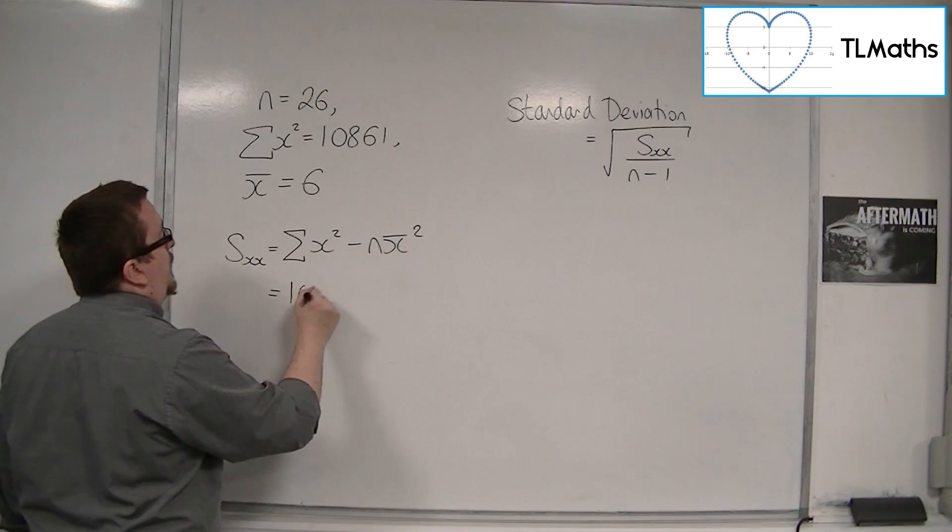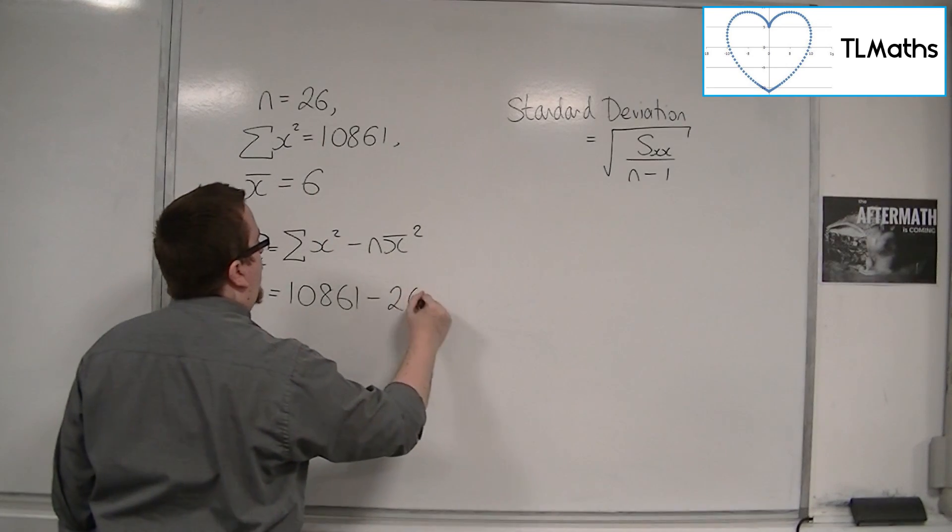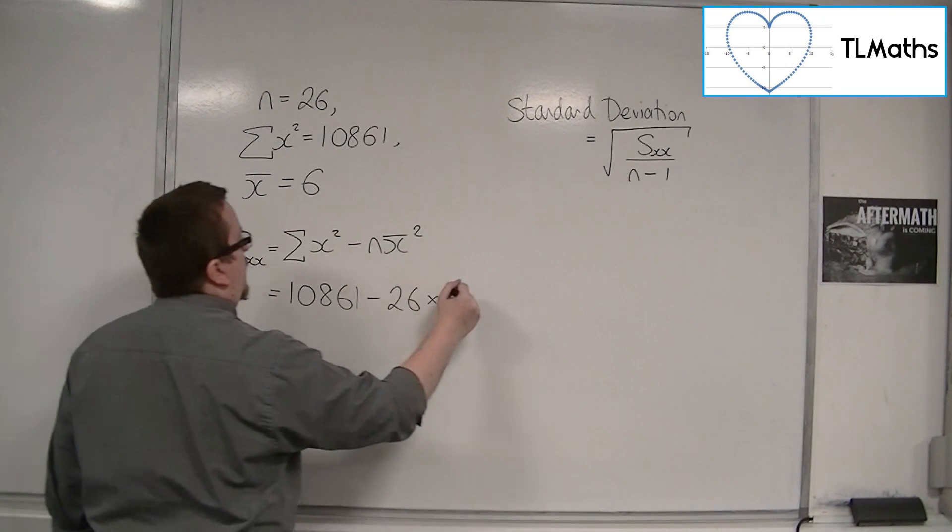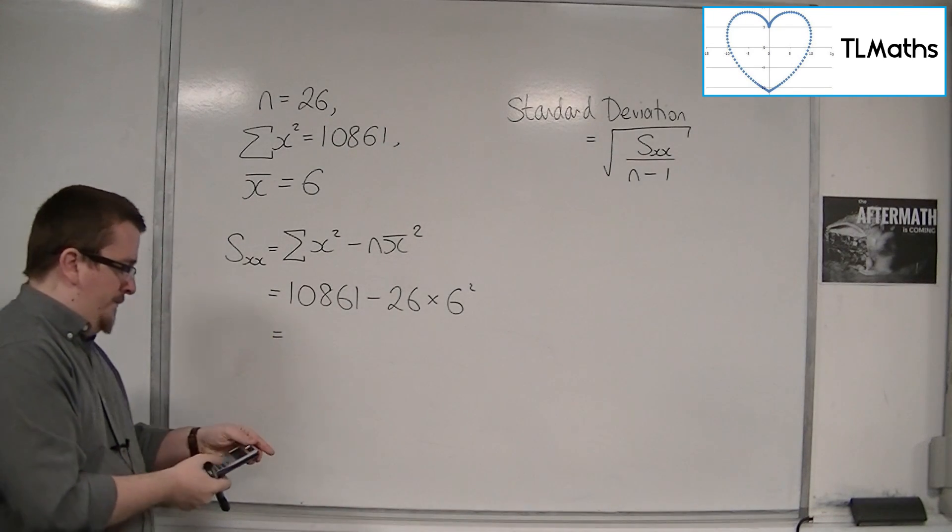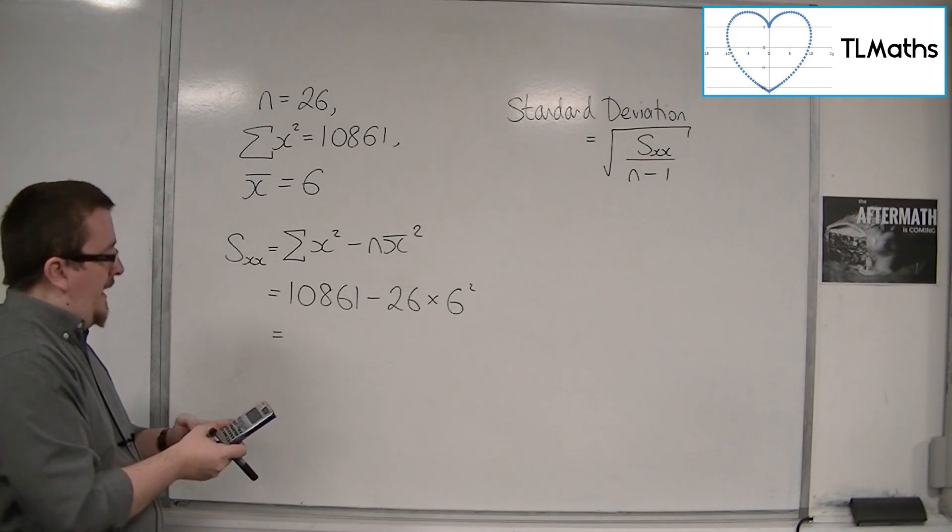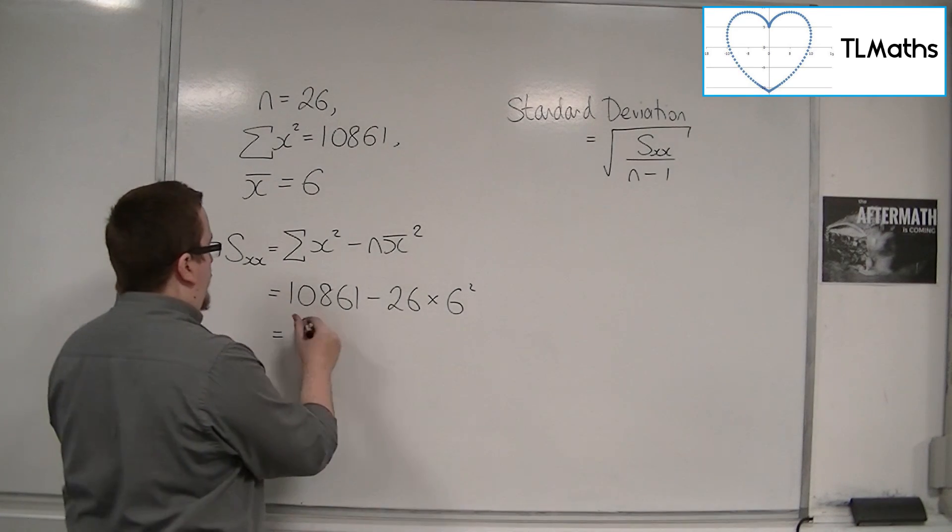In this case, it's 10861, take away n, so 26, times 6 squared. We can pop that into our calculator: 10861, take away 26 times 6 squared, is 9925.